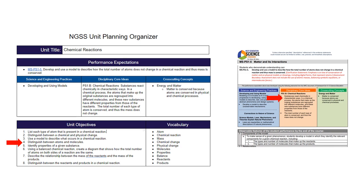The disciplinary core idea states that substances react chemically in characteristic ways. In a chemical process, the atoms that make up the original substances are regrouped into different molecules, and these new substances have different properties from those of the reactants. Objectives for this section might be: distinguish between atoms and molecules, and identify the properties of a given substance. The cross-cutting concept for this performance expectation is energy and matter. It states that matter is conserved because the atoms are conserved in a physical and chemical process. My objective might be: using a balanced chemical equation, create a diagram that shows how the total number of atoms on both sides of a reaction are the same, and describe the relationship between the mass of the reactants and the mass of the products. This also means that students will need to be able to distinguish between reactants and products in a chemical reaction.